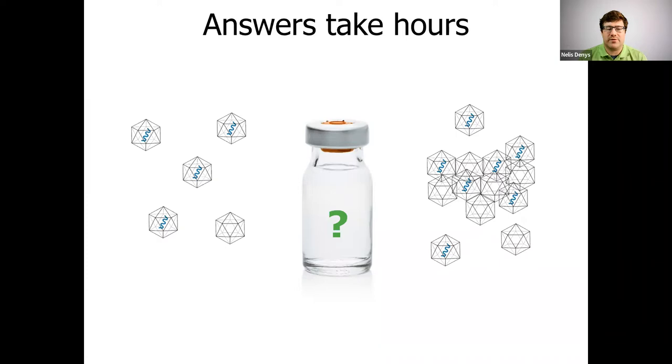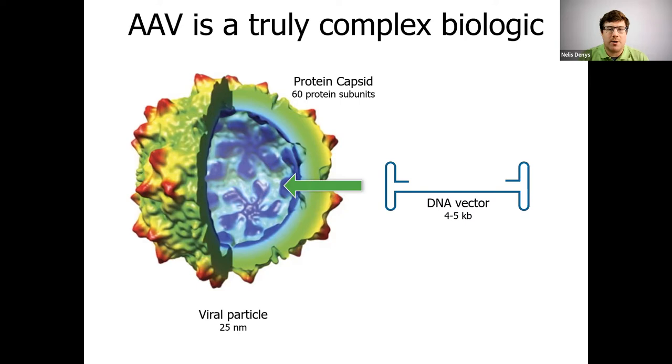And we all know that AAV is a truly complex biologic consisting of a protein capsid assembled by three different viral proteins in a specific ratio. And then inside of them, a single-stranded DNA vector. Now, when you characterize your AAV, you have a lot of things going on. It's important to know the amount of protein you have, the amount of single-stranded DNA you have, if your capsid is intact, if it's all at the right size, and if there's any aggregation.